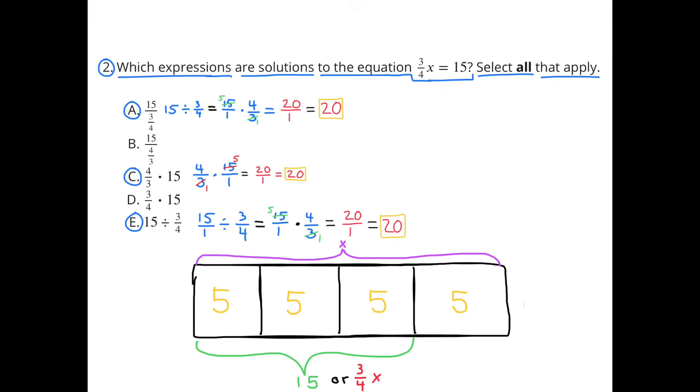Number 2. Which expressions are solutions to the equation 3 fourths x equals 15? Select all that apply. I selected A and E because they're pretty much the same thing. E says 15 divided by 3 fourths and that equals 20. And A says 15 divided by 3 fourths because 15 over 3 fourths means 15 divided by 3 fourths and that equals 20.